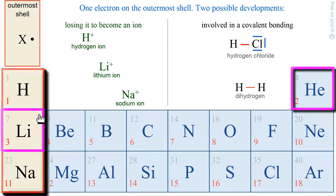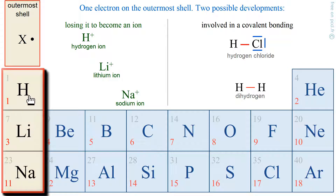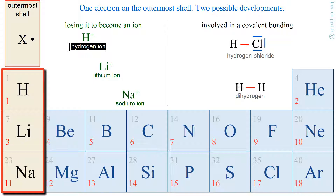Lithium, if it loses its electron, will become the lithium ion — a positive ion since it loses an electron — and it will have the same electronic configuration as helium, K2. Hydrogen is a special case. If it loses its electron, it no longer has any electronic structure at all, so it can't look like another atom. It loses its electron and becomes a proton.